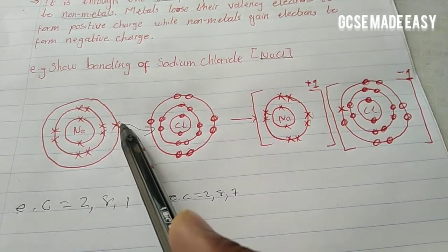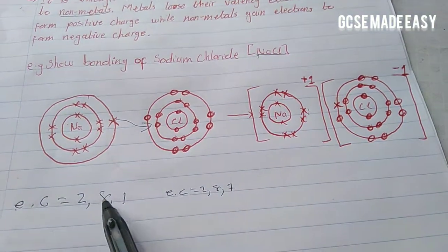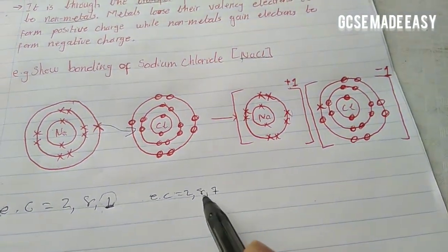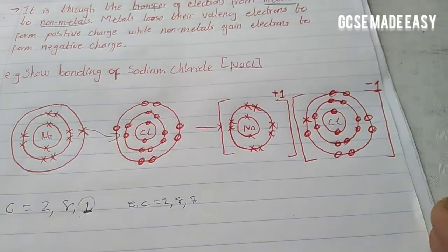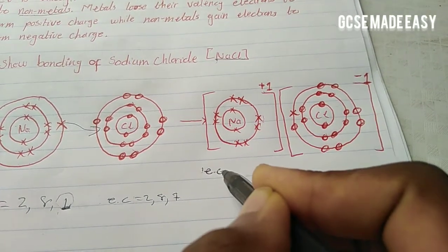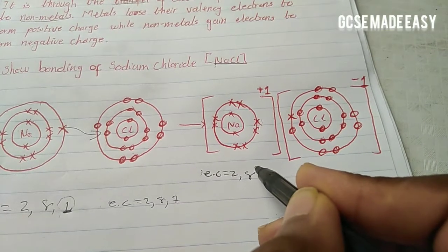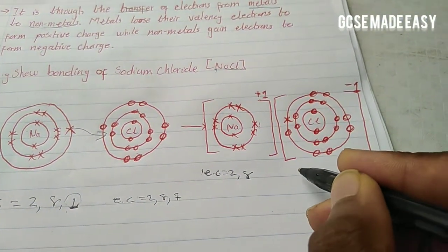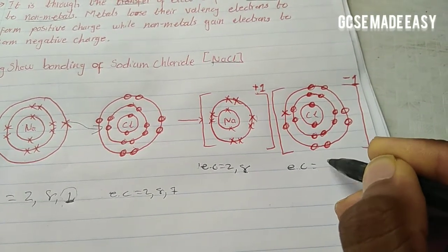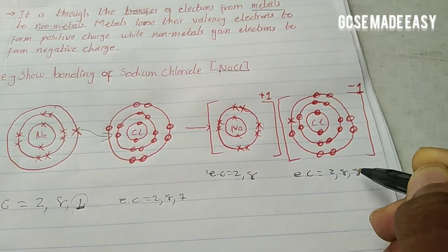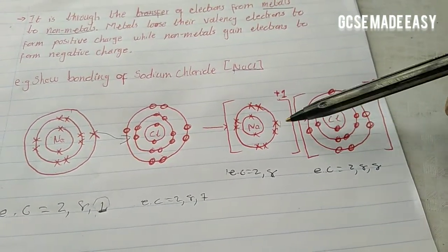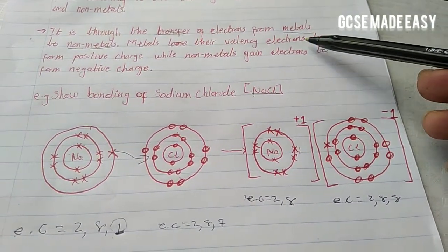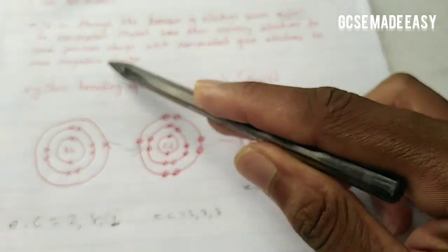Sodium has lost its valency electron so that it remains with a valency shell of eight electrons. Its new electronic configuration is 2, 8 — it has achieved its octet configuration. Chlorine gains that electron, and its new electronic configuration becomes 2, 8, 8, also achieving octet configuration.